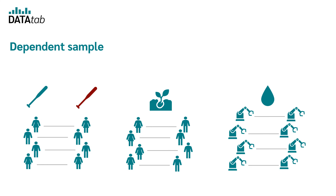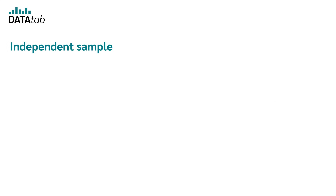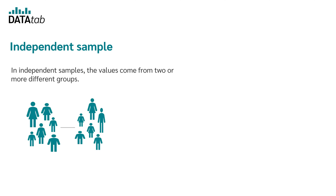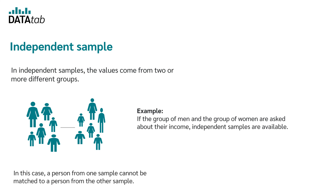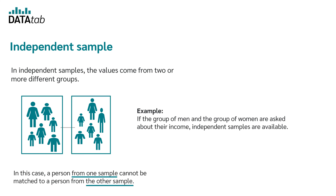But enough about dependent samples — let's move on to independent samples. In the case of independent samples, the values come from two or more different groups. For example, if you ask a group of men and a group of women about their income, we have independent samples. In this case, a person from sample 1 cannot be assigned to a person from the other sample.